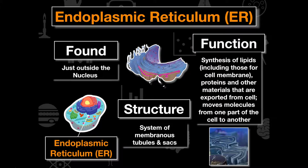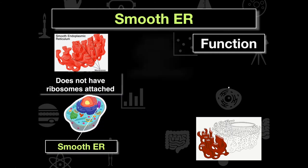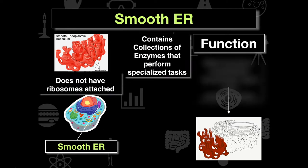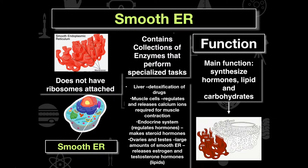There are two categories of endoplasmic reticulum. The smooth endoplasmic reticulum does not have ribosomes attached to it — that is why it appears smooth. Its main function is to synthesize hormones, lipids, and carbohydrates, and it allows for filtering of toxic materials out of cells. The smooth ER contains collections of enzymes that perform these specialized tasks. In the liver, cells have large quantities of smooth ER to detoxify drugs or toxins.